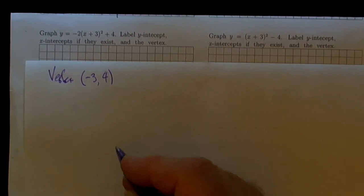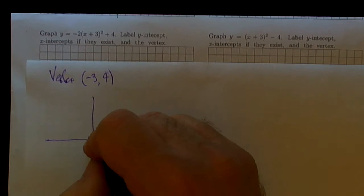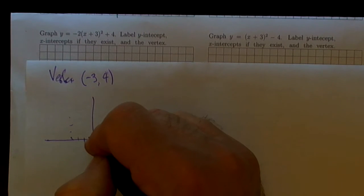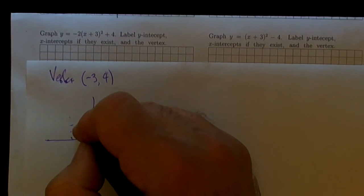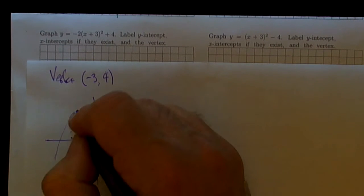We also know that it's an opening down parabola, so the graph has got to look something like this. Negative 3 on the x-axis, up 1, 2, 3, 4 on the y-axis. So there's negative 3, 4, and this thing has got to be opening down.